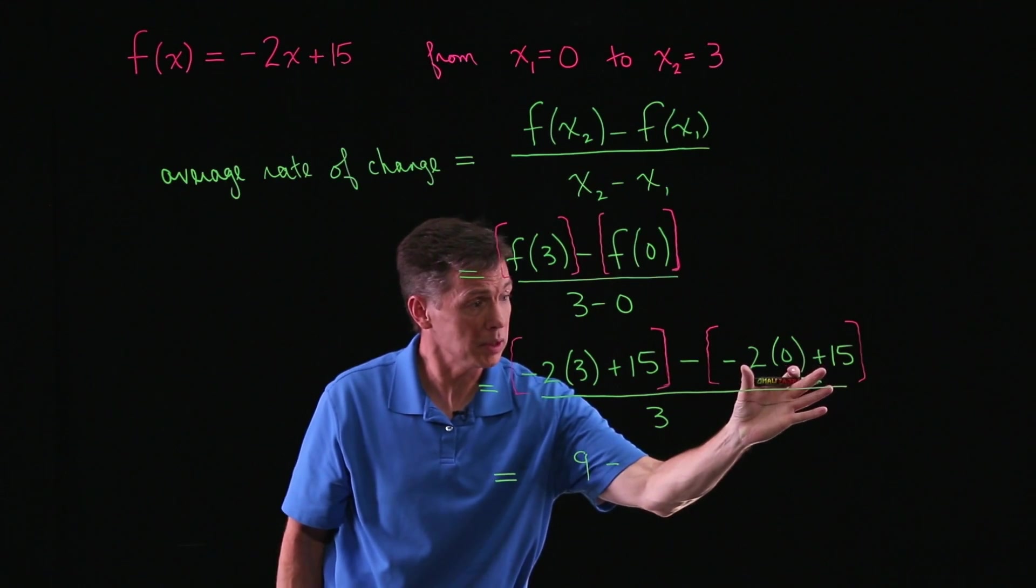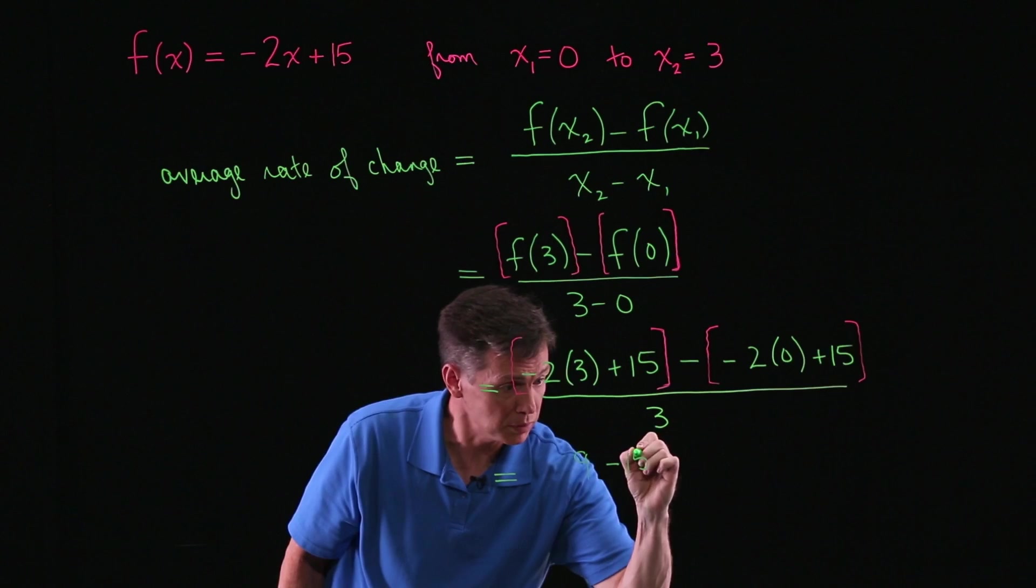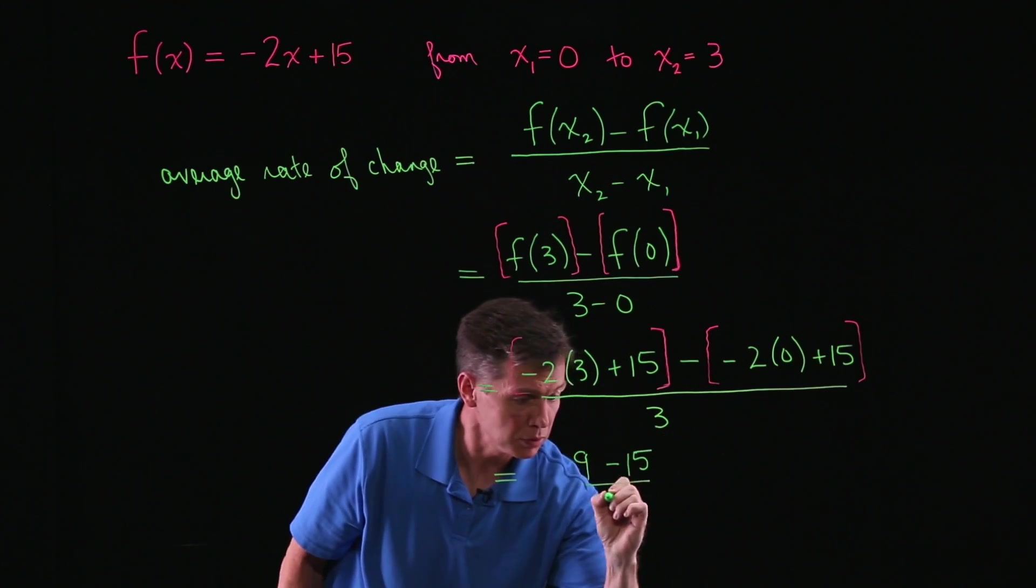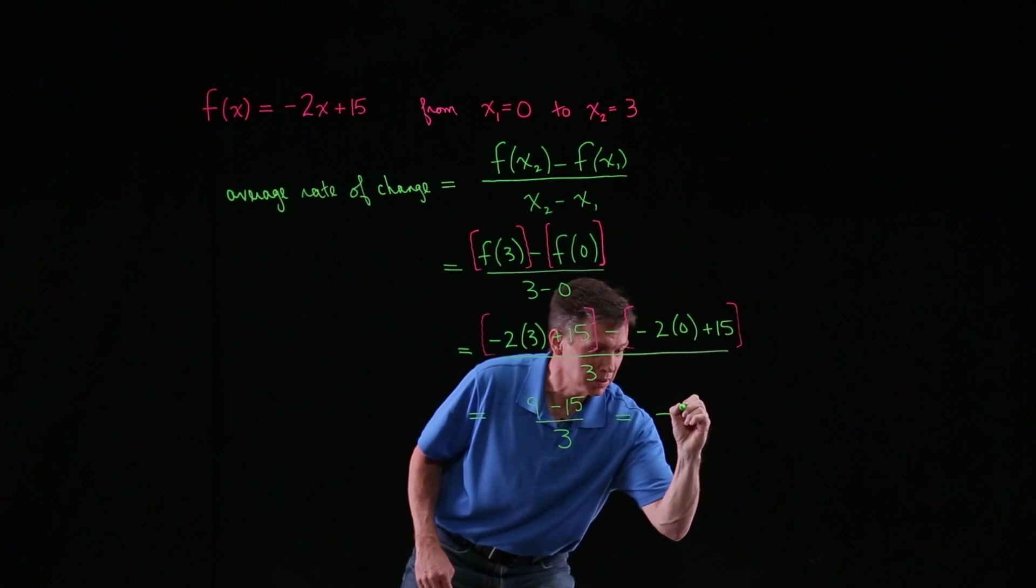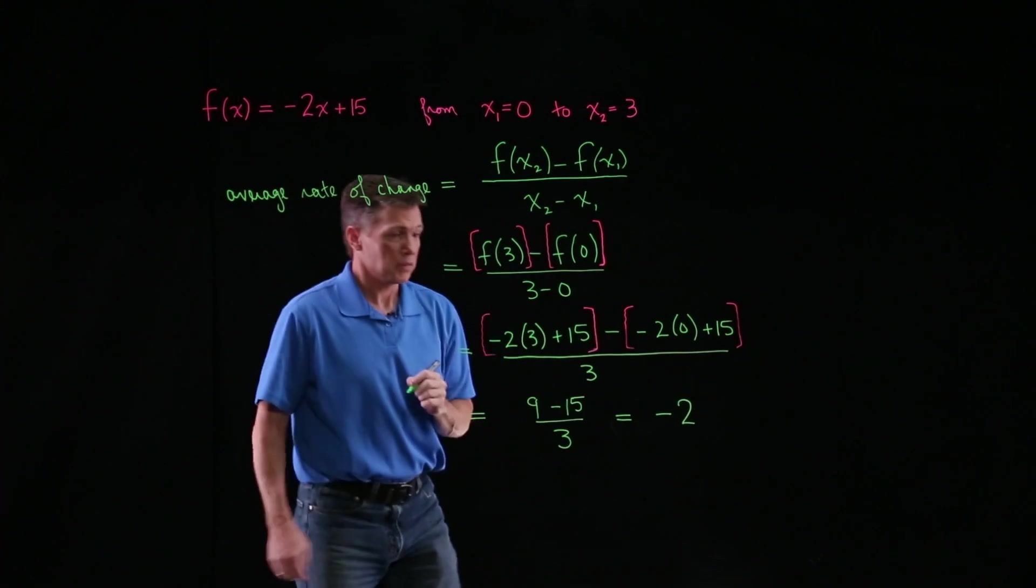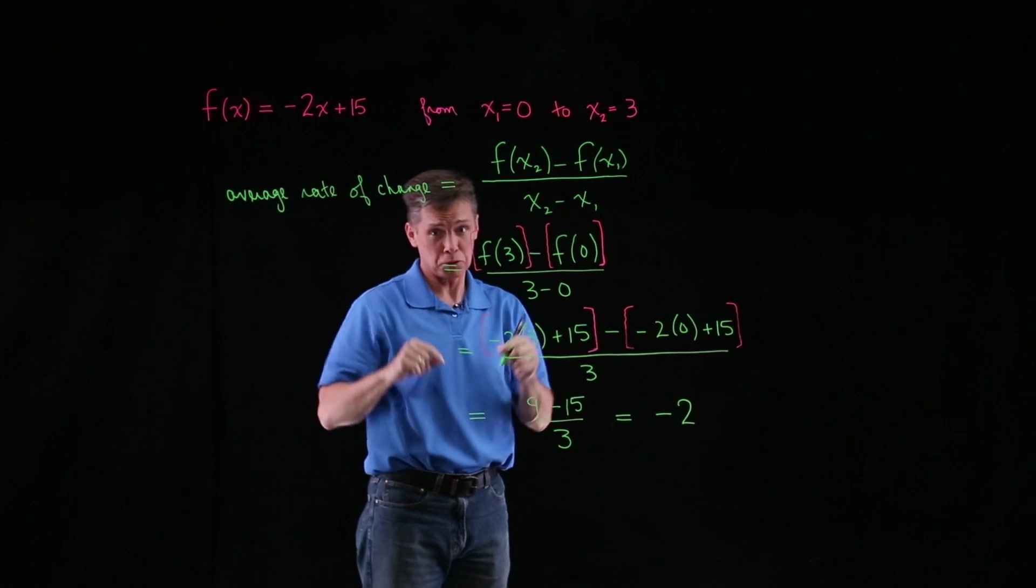Subtract. Here I'm getting 0 plus 15, so 15. Still divided by 3. That looks like a negative 2. And that would be our average rate of change for this function over those two points.